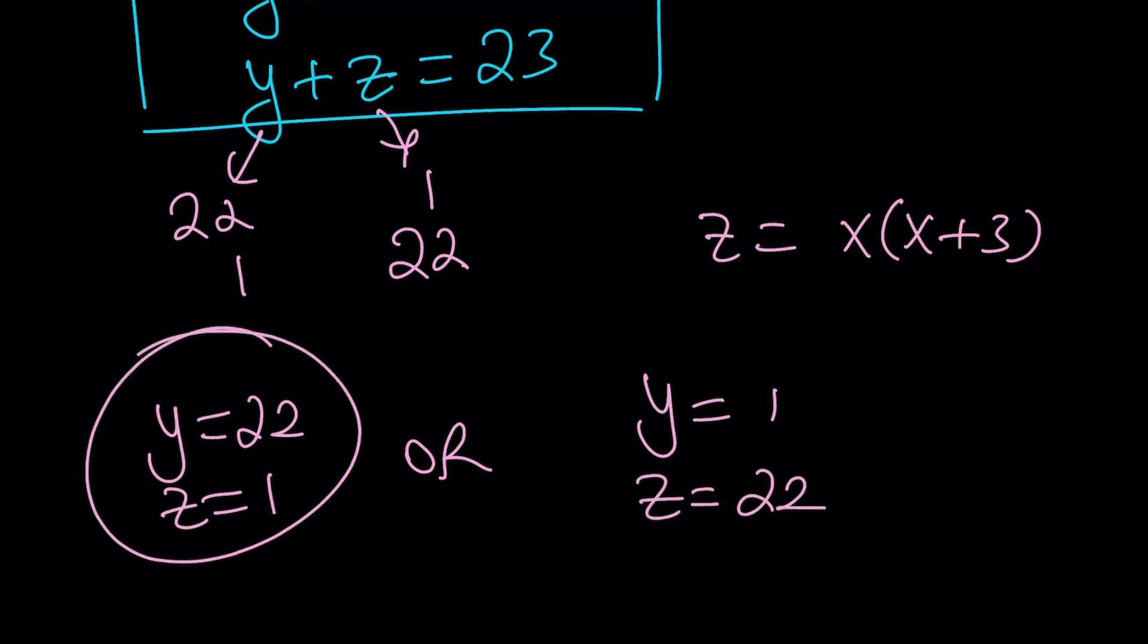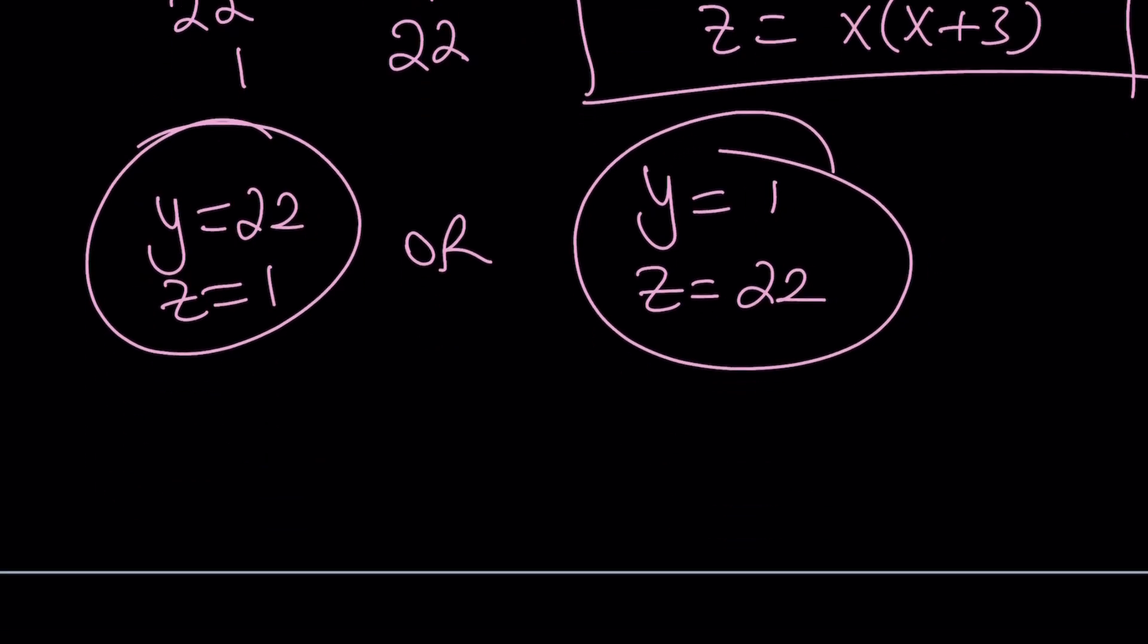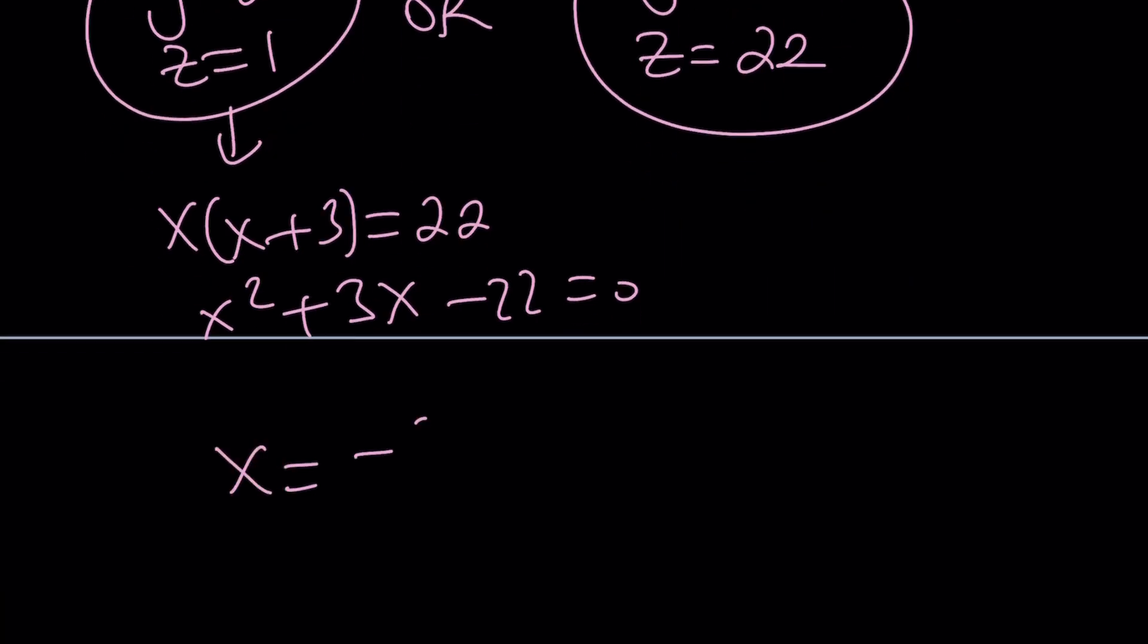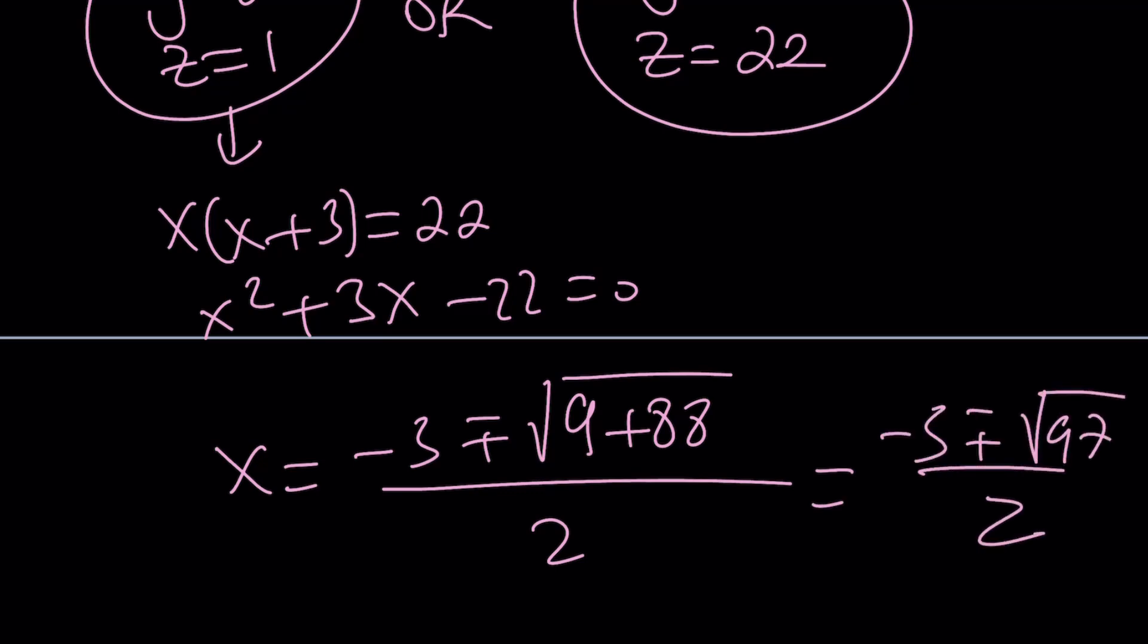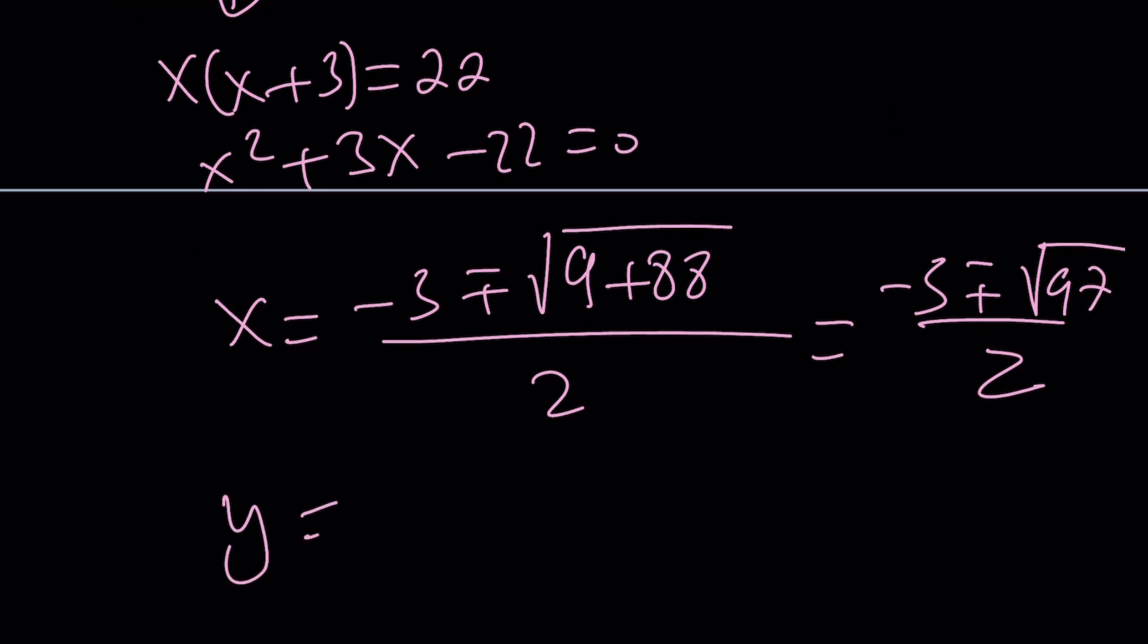And this is super duper awesome because I got z here. And let's write our equation one more time. We got y equals 22. That gives us the value of y right away. But we also got x times x plus 3 equals 22, which gives us x squared plus 3x minus 22 equals 0. And from here, x equals negative b plus minus the square root of b squared, which is 9, minus 4ac plus 88. And that's not going to be a super duper nice answer. But guess what? That's going to work. So those are the x values for y equals 22.